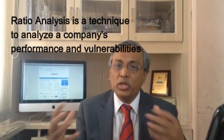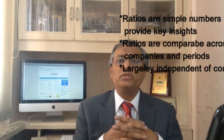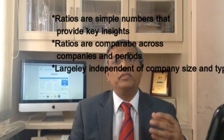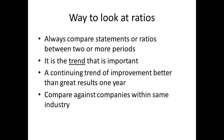The beauty of ratios is that they are very simple to understand. Not only are they simple to understand, these ratios are largely independent of the type and nature of the company, which means you can compare companies which are 100 million dollars or even 10 million dollars and the ratios would be comparable. Always compare ratios between two or more periods — it is the trend that is important and not the ratio per se. A continuing trend of improvement is better than great results in one year. You can compare ratios within your own company between periods or compare ratios from others in the same industry.